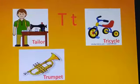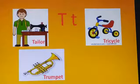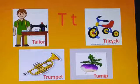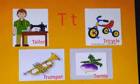Trumpet: Trumpet is a musical instrument. Turnip: Turnip is a round white vegetable that grows underground.